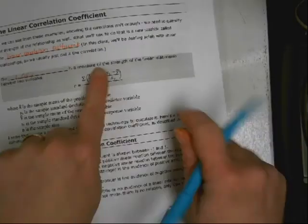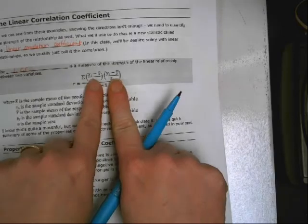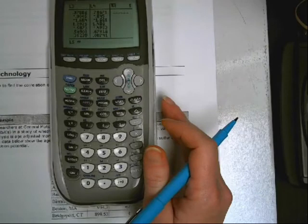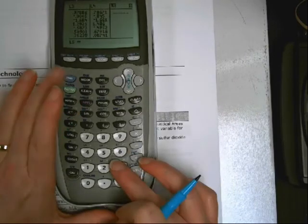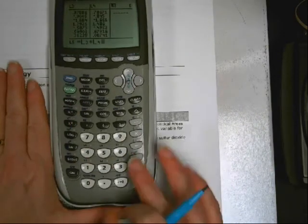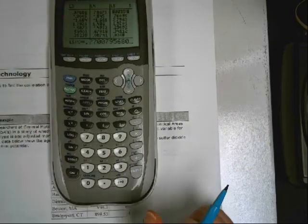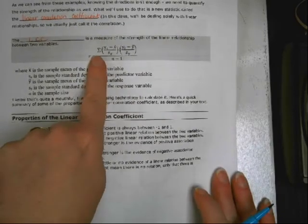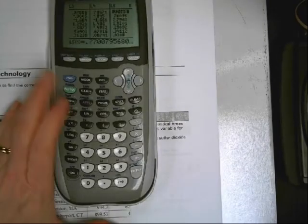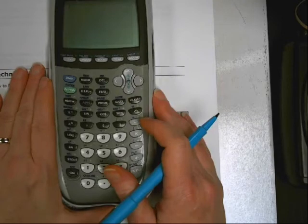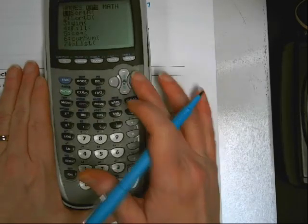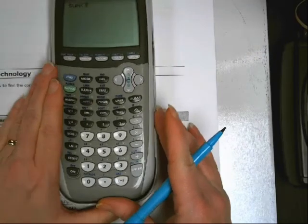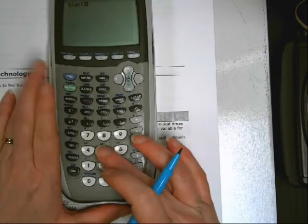All right, so we've now found these things. So, we need to multiply them. So, I go over to list five, and they're in list three and list four, so I can just put L3 times L4. All right, now this sigma tells me I need to sum those things, so second, quit, go to a regular page, second stat, arrow over to math, five is sum, and it's list five that I need to sum.